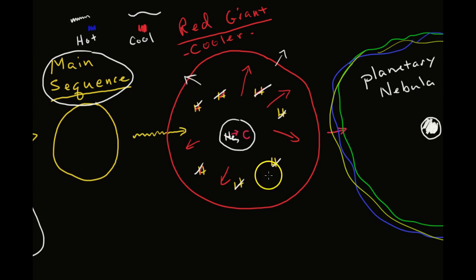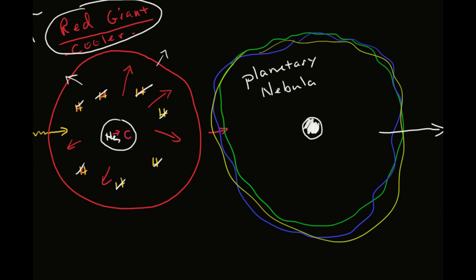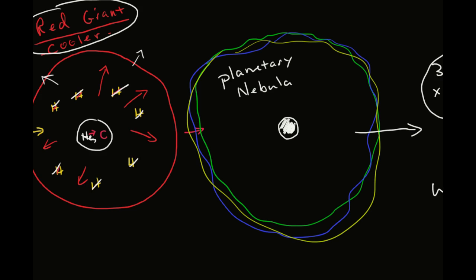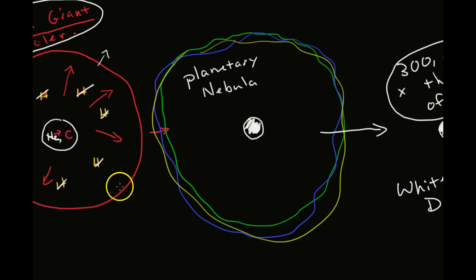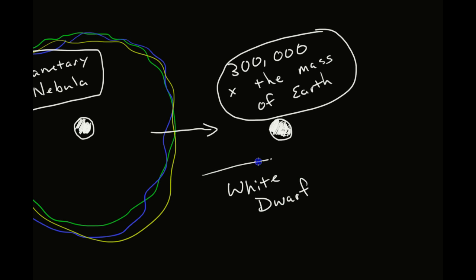And then it starts to burn up its hydrogen. The gases expand. We end up with a red giant, which is cooler. The helium starts to create carbon. And the gases continue to float away. We end up with something called a planetary nebula. And what's left over is this thing called a white dwarf.